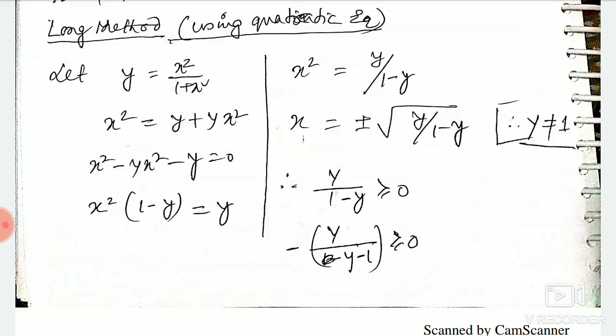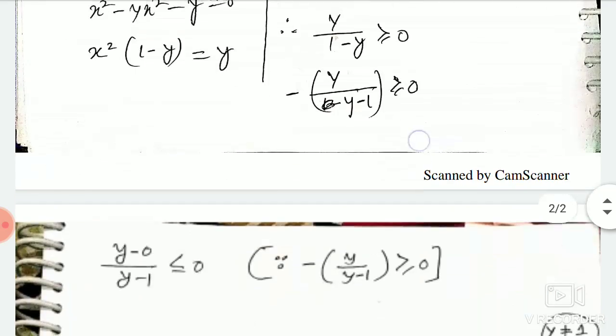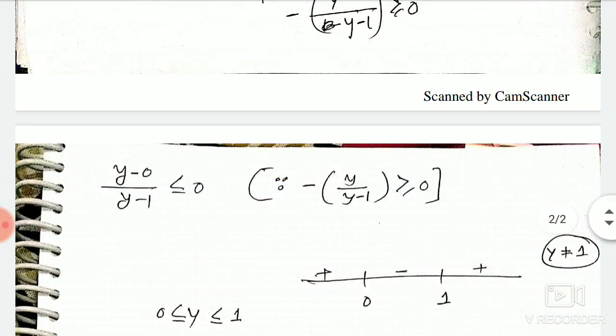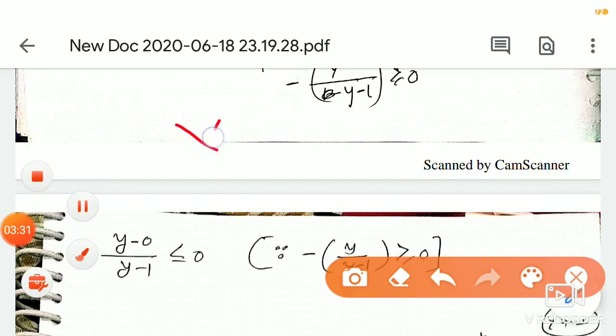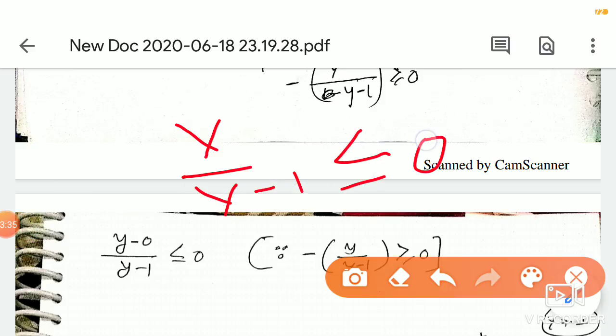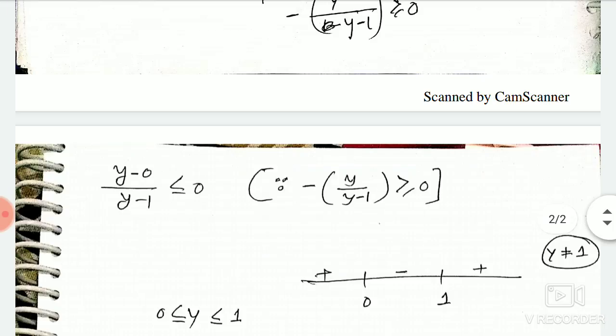y/(y-1) ≥ 0. Minus we put, then what will happen? The sign will change. See how it is. That means we can write another line: y/(y-1) ≤ 0. Now from this we get (y-0)(y-1) ≤ 0. Apply the wavy curve method.